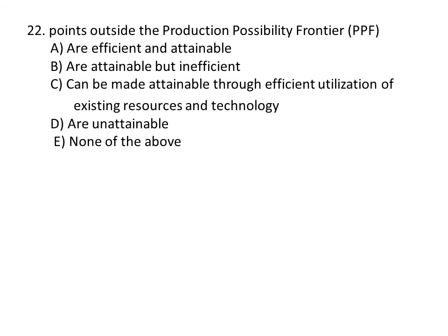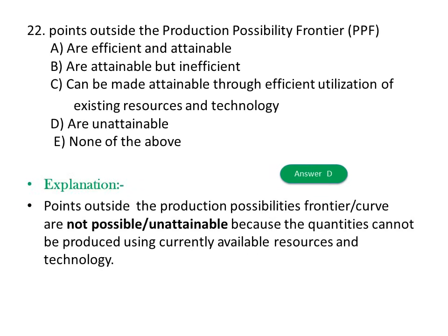Question twenty-two: Points outside the production possibility frontier are: A) Efficient and attainable, B) Attainable but inefficient, C) Attainable through efficient utilization of existing resources, D) Unattainable, E) None. The answer is D, unattainable. Explanation: Points outside the production possibility frontier are not possible because the quantity cannot be produced using currently available resources and technology.